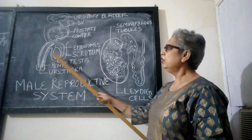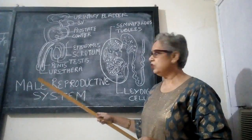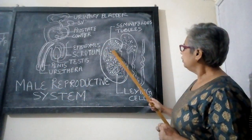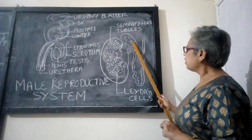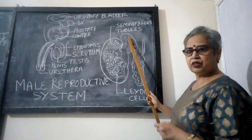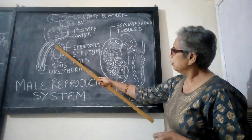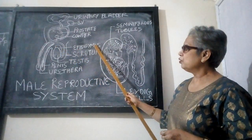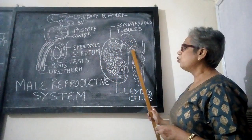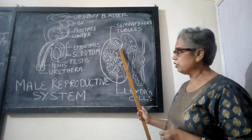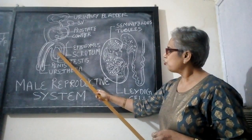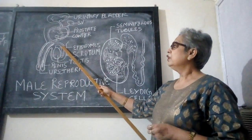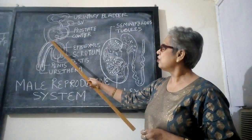Now we come to the accessory or secondary organs. The sperms which are produced in the testes move through ducts and enter this cap-like structure on the testes called the epididymis. The sperms get stored here in the epididymis. From the epididymis, the sperms enter into this tube-like structure called the vas deferens, and it ascends up.